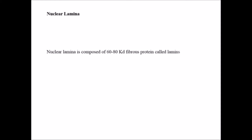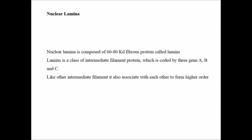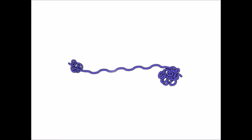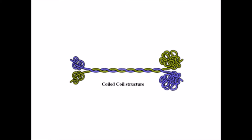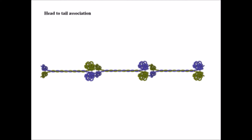Nuclear lamina is composed of 60 to 80 kilodalton fibrous proteins called lamins. Lamins are a class of intermediate filament proteins coded by three genes: A, B, and C. Like other intermediate filaments, they associate with others to form higher-order structures. The single lamin unit dimerizes to form a coiled-coil structure.